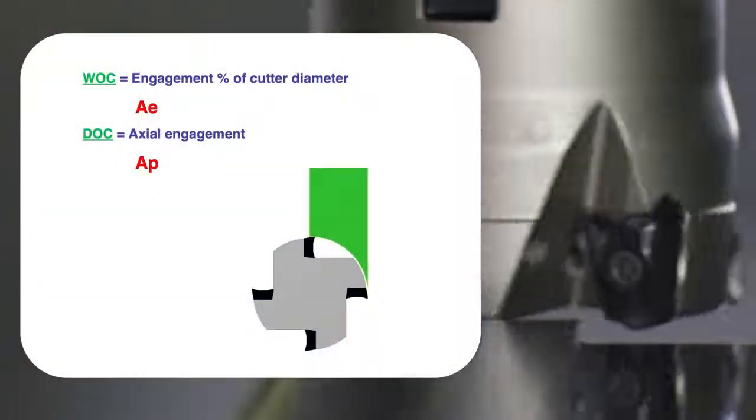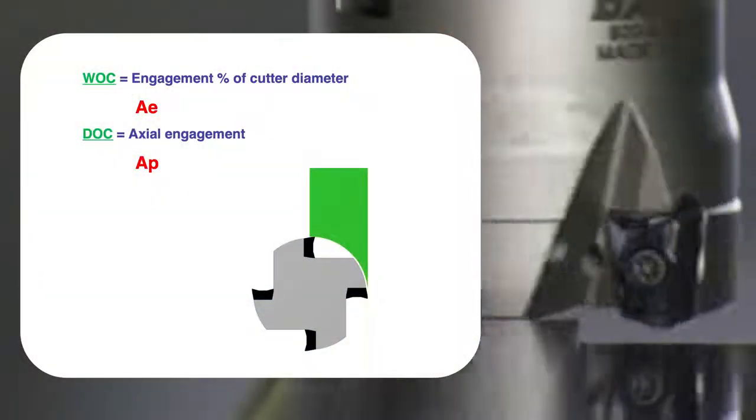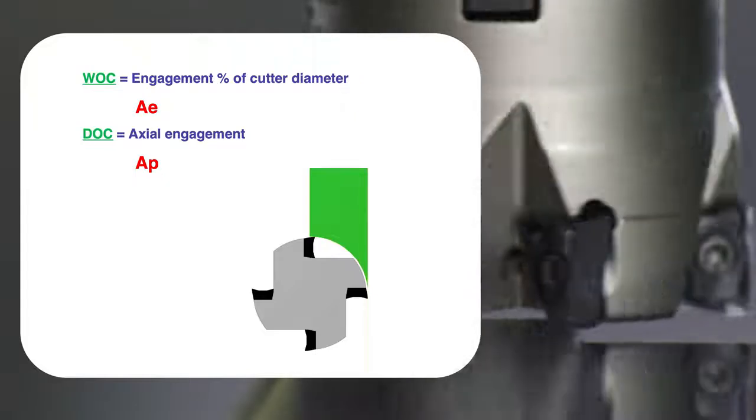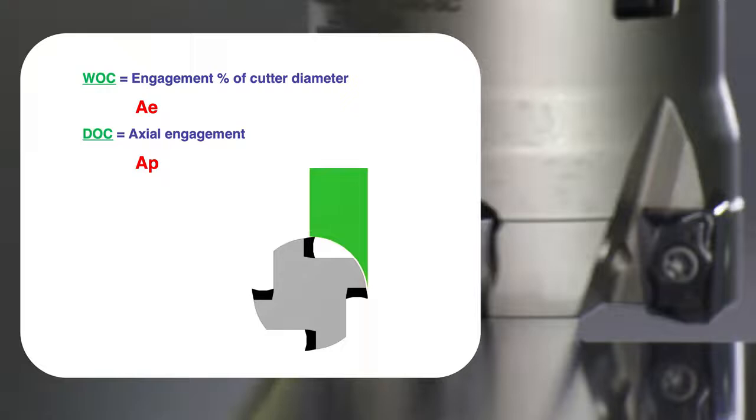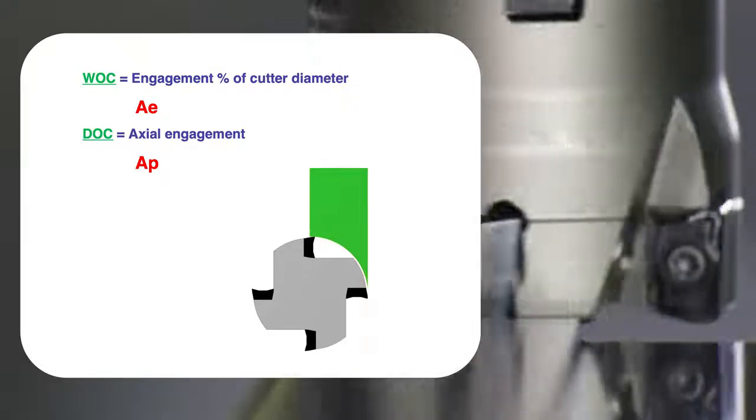Our last two terms that relate specifically to our operating parameters are WOC and DOC. WOC, referred to as AE in speed and feed formulas, stands for width of cut and is typically referred to either as a percentage of the cutter diameter or as a numerical value. For example, in our diagram, if we say the cutter diameter is 2 inches and we see that the material is about 50% of the tool diameter in width, then our width of cut is 50% or 1 inch. The ideal amount is dependent on the application and the material being machined, which we'll cover later.